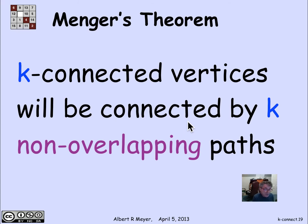So if two vertices are k connected, then there are completely separate k separate paths connecting them, which means of course that you have to cut each of the paths in order to separate them. And a similar theorem goes for edge connected.